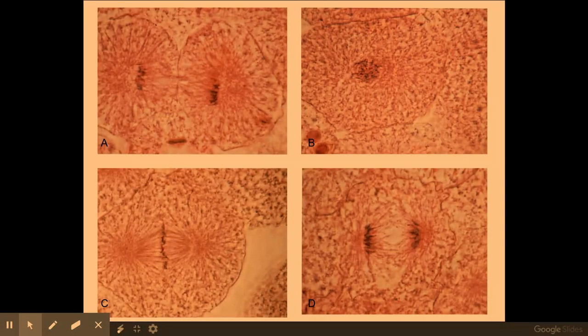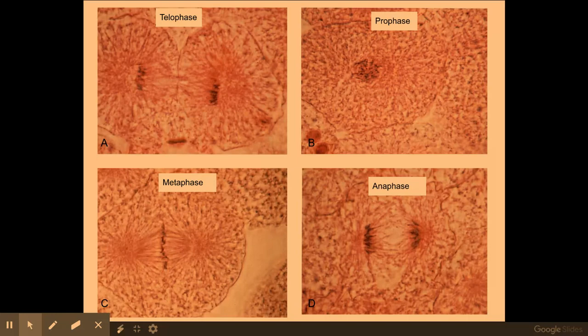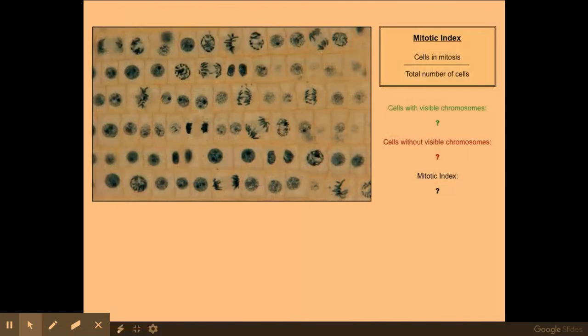You need to be able to identify images taken from a light microscope, so pause and have a go if you'd like — remember to think about why each image shows a particular phase. You may also be asked to calculate a mitotic index using the formula provided, so pause and have a go at that too.